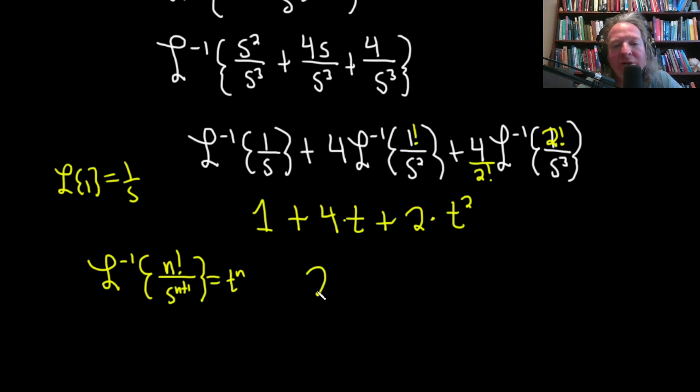The final answer is 2t squared plus 4t plus 1. Pretty decent example.